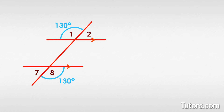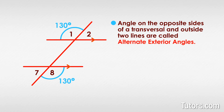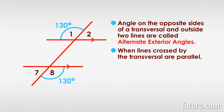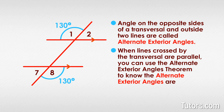That's all there is to it. Now you know that angles on the opposite sides of a transversal and outside two lines are called alternate exterior angles, and that when lines crossed by the transversal are parallel, you can use the Alternate Exterior Angles Theorem to know the alternate exterior angles are congruent.